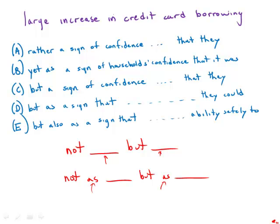Notice right away the only choice that has 'but as' is choice D, so right away we know that's the correct answer.